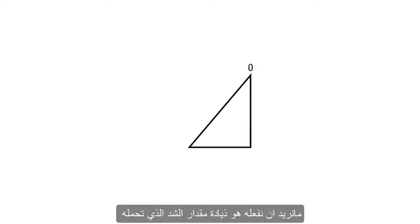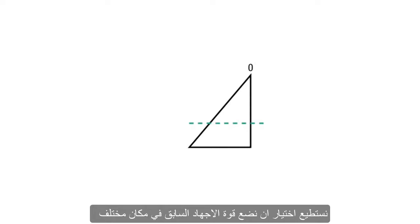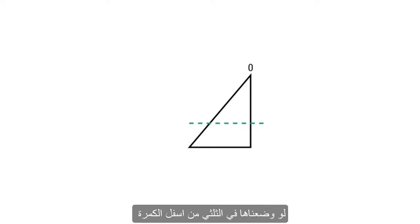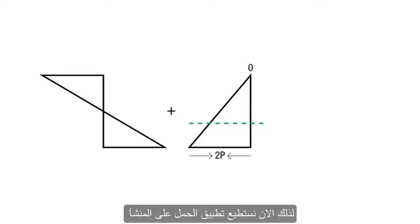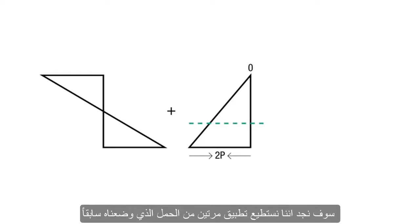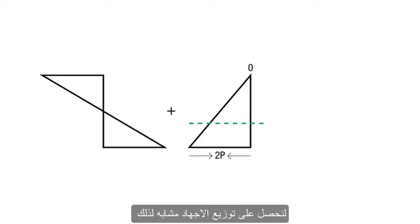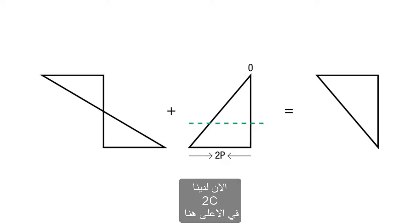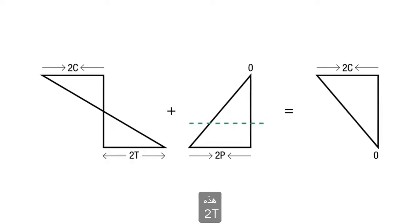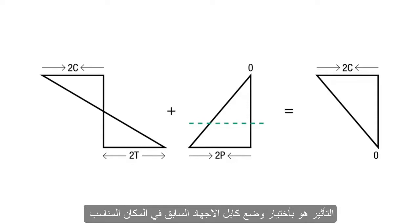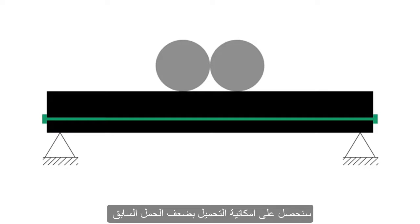What we want to do is maximize the amount of tension that we carry. We can choose to put the pre-stressing force at a different location — specifically so that it induces zero stress at the top. If we put it two-thirds of the way down the beam, the stress becomes equal to 2p. We can then apply the load and find that we can apply twice as much load as before, ending up with a stress distribution of 2c at the top and 2t at the bottom. By choosing the appropriate cable location, we can carry twice as much load.